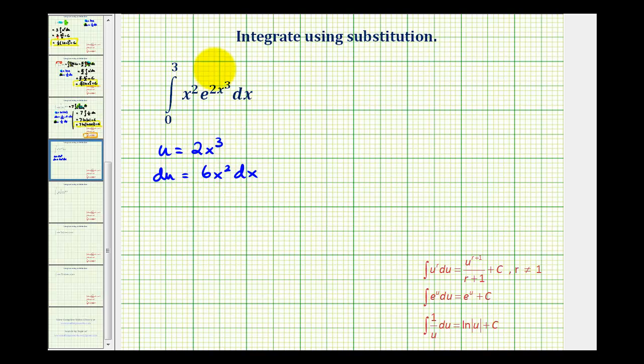Let's see how this works out. If we let u equal two x cubed, we'd have e to the u here and then what's left is x squared dx. But notice how here du is equal to six x squared dx.